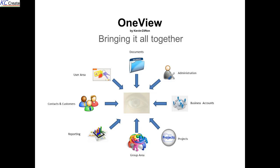OneView does that, and it allows multiple users to share that information, creating a very small footprint, while also reducing the infrastructure needed to support all of that. At the same time, it minimises the need for migration into the application infrastructure by utilising the ability to link to currently existing objects on the network, while also allowing the ability to migrate them if needed.